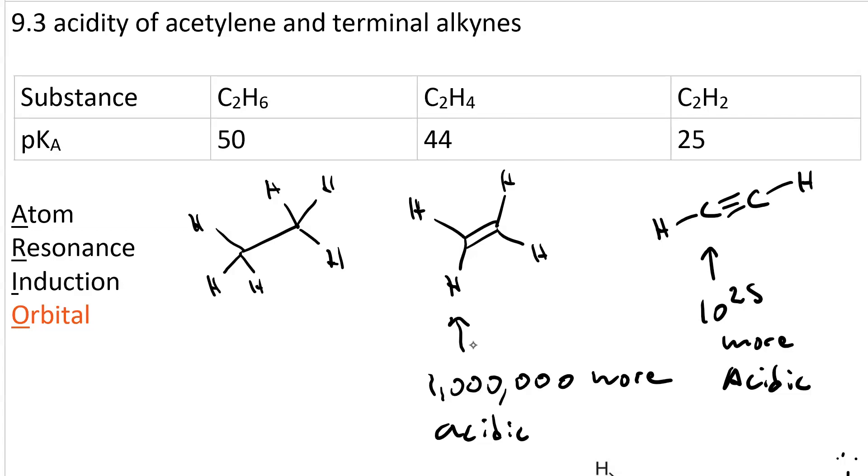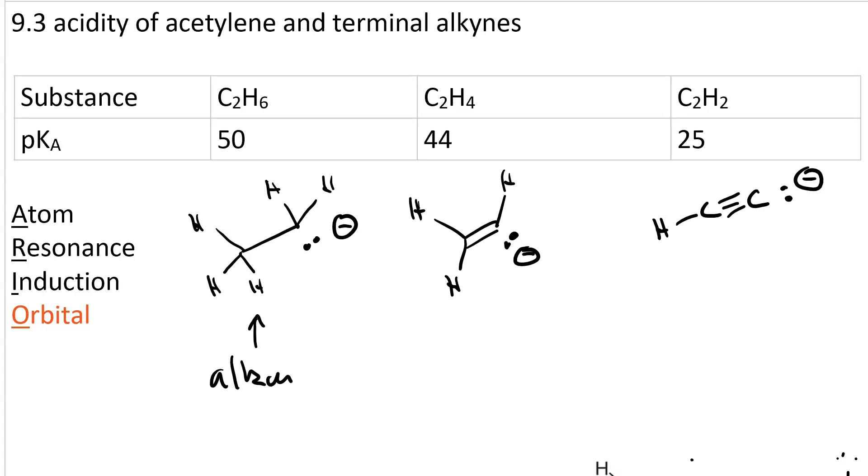So let's deprotonate each one of these and see if we can evaluate it via ARIO. If your base comes in and does proton transfer, that sigma bond will turn into a lone pair. I'm going to do this for all of these compounds because ARIO is used to evaluate the stability of these anions. So this is your alkanide, this is your alkenide, and this is your alkynide ion.